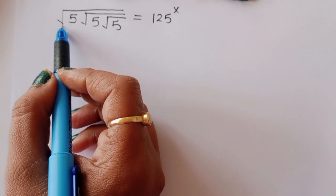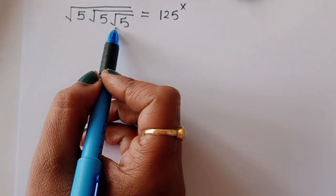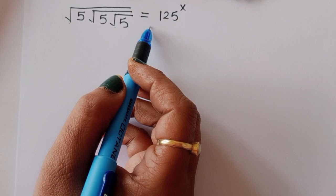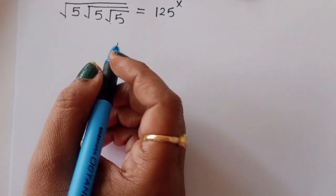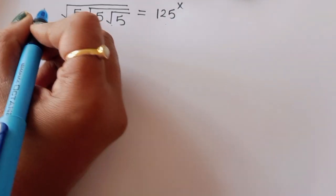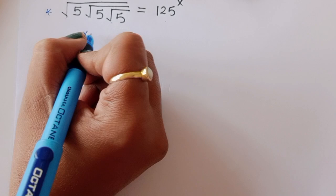The question is given: square root of 5 under square root of 5 under square root of 5 is equal to 125 raised to x. We have to find out the value of x here.